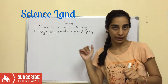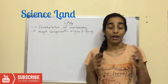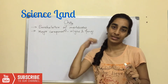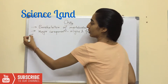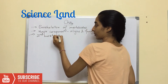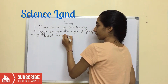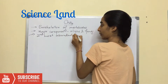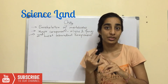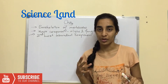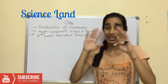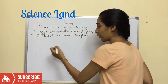After cellulose, the second most abundant component is chitin. It is structurally very similar to cellulose. Let's jump into the main structure of chitin.